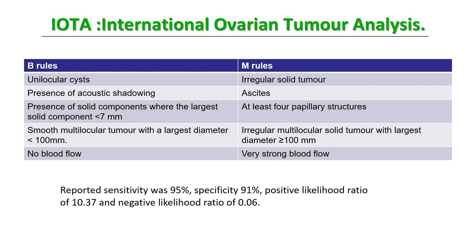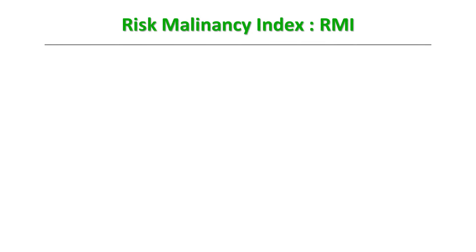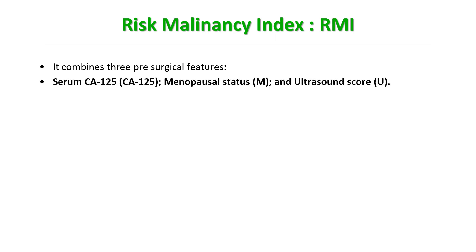The IOTA rules have a reported sensitivity of 95% and specificity as high as 91%. There is another index called the Risk Malignancy Index, or RMI score. It combines three pre-surgical features: serum CA-125, menopausal status, and ultrasound score. For CA-125, you simply take the exact figure in international units per mL. For menopausal status: if the lady is pre-menopausal, she is scored as 1.